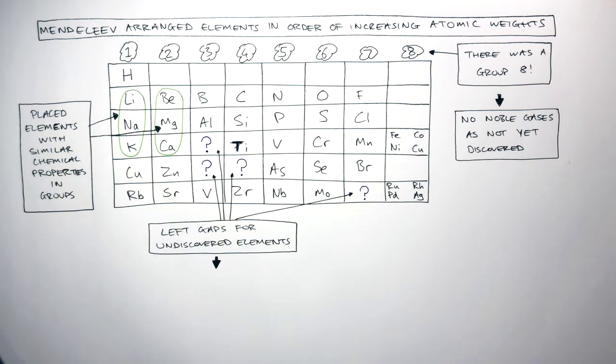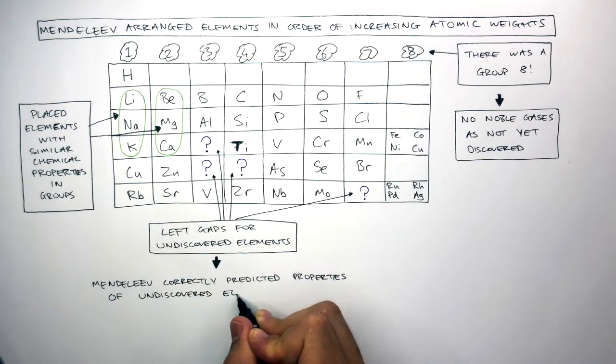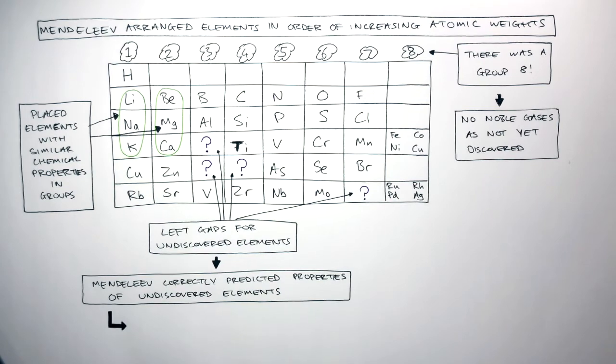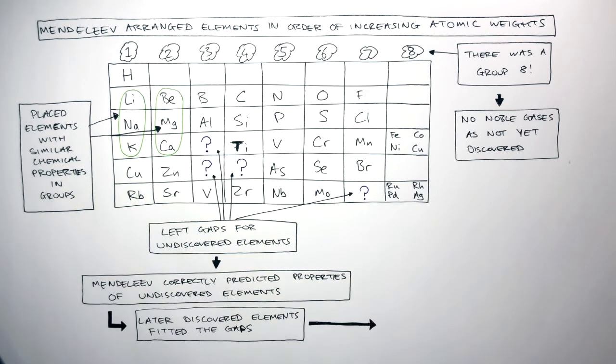Not only did Mendeleev leave gaps but Mendeleev correctly predicted the properties of the undiscovered elements. So when scientists later discovered the elements fitted the gaps. Other scientists then accepted the table.